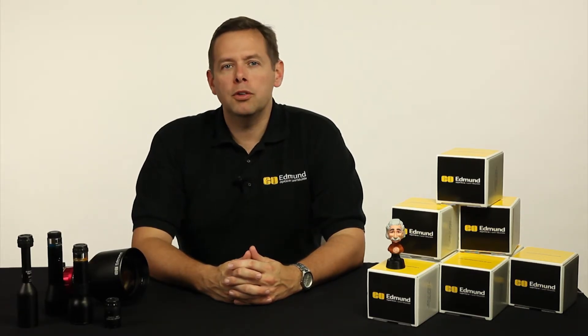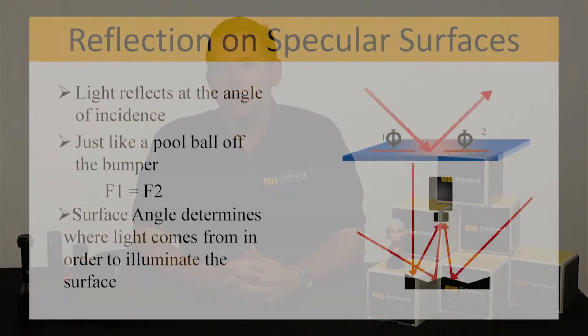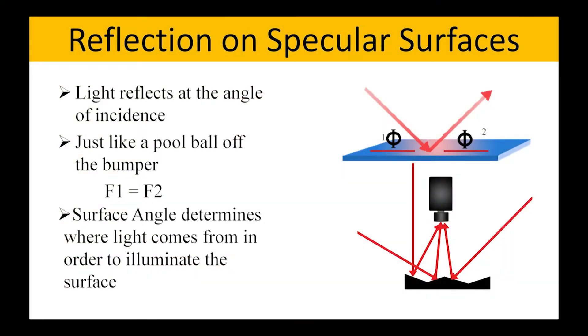Much like playing pool, if you shoot a pool ball into the bumper on a pool table, the angle of incidence is going to equal the angle of reflection of that ball going off the bumper. Lighting works the same way going off of any given object.